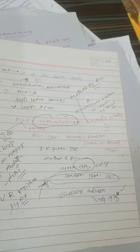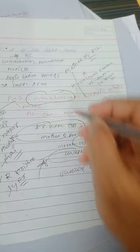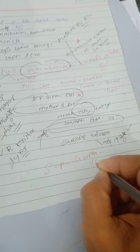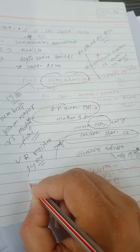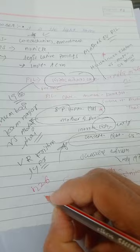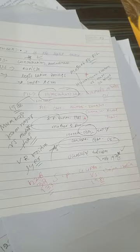In SP Gupta vs Union of India 1981, a landmark judgment regarding PIL was given. Under this, anyone can apply PIL in the High Court under Article 226, and anyone can apply PIL in the Supreme Court under Article 32. There is also another provision — Section 133 of the Criminal Procedure Code — which also allows anyone to apply PIL under this provision.